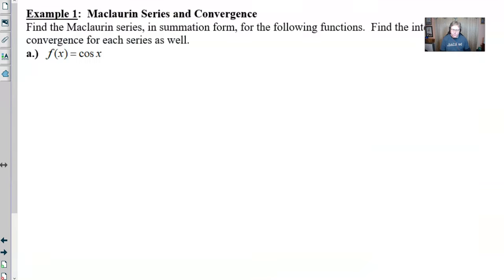So our one example that we're going to look at says, find the Maclaurin series in summation form for the following functions, and then find their intervals of convergence as well. Now, I am going to go ahead and make the assumption that a student seeing this problem does not have the first few terms of cosine memorized. If you feel like that's not me, I'm pretty good with that, you can certainly fast forward the video a little bit to get to the part where we start writing the summation.